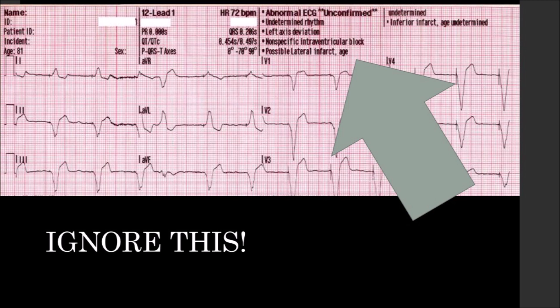Had we read that block of computer information first, we would have gotten some sort of bias — whether we wanted to prove the computer right or disprove it. We want to avoid confirmation bias in EKG interpretation the same way we want to avoid it in scientific literature and research. That arrow is something you should ignore until you have made your diagnosis. Moving forward, we have a paced rhythm — now we want to confirm: does our patient match that? Hey, do you have a pacemaker? Always confirm your EKG interpretation with your patient presentation.